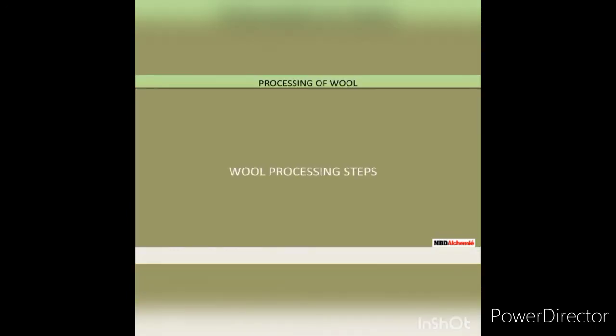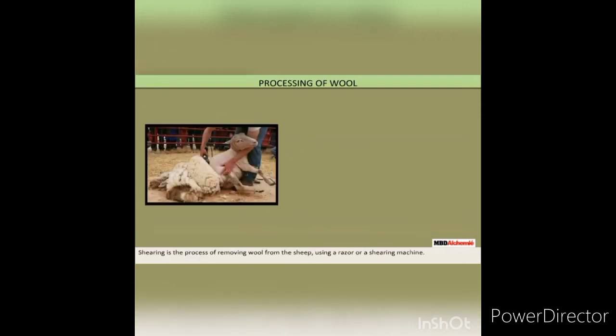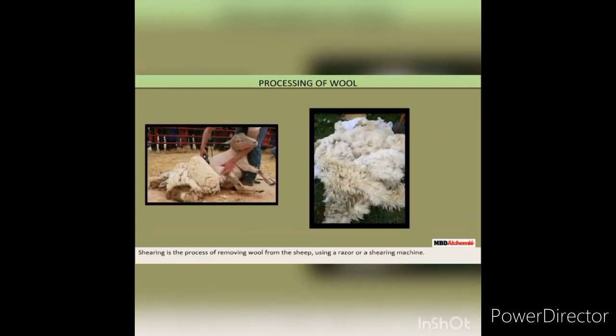Processing of wool consists of the following steps. Shearing is the process of removing wool from the sheep using a razor or a shearing machine. Wool straight off a sheep contains a high level of grease, dirt, dead skin, vegetable matter and lanoline, and is known as grease wool.